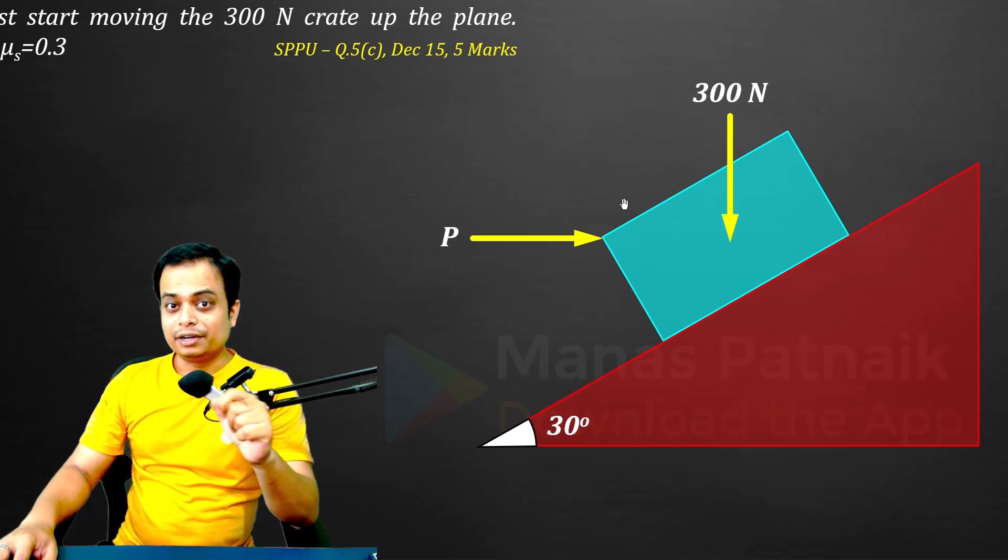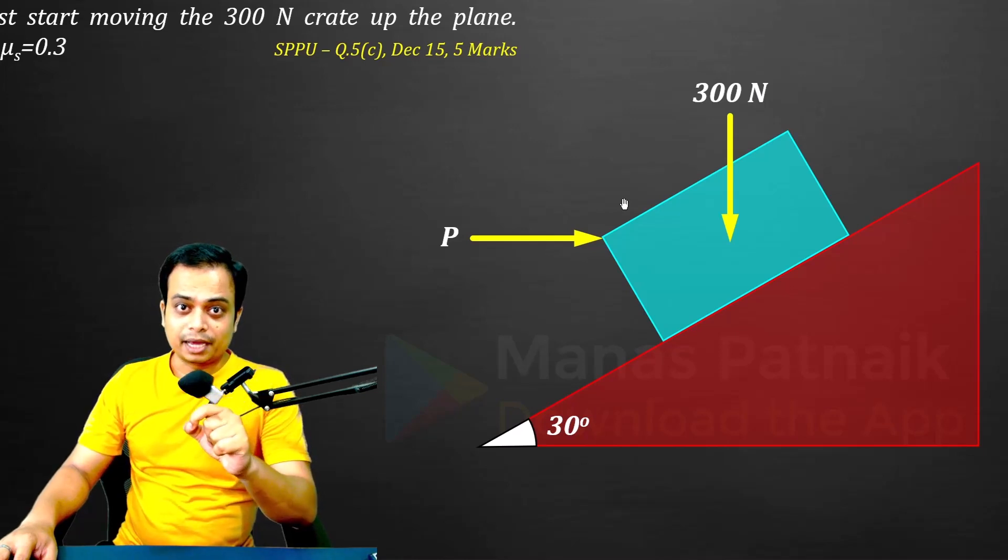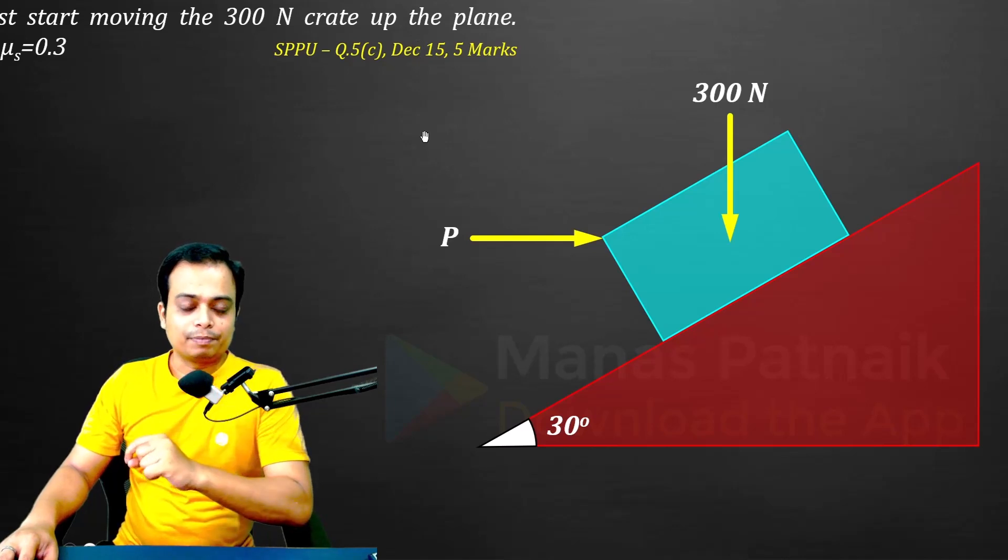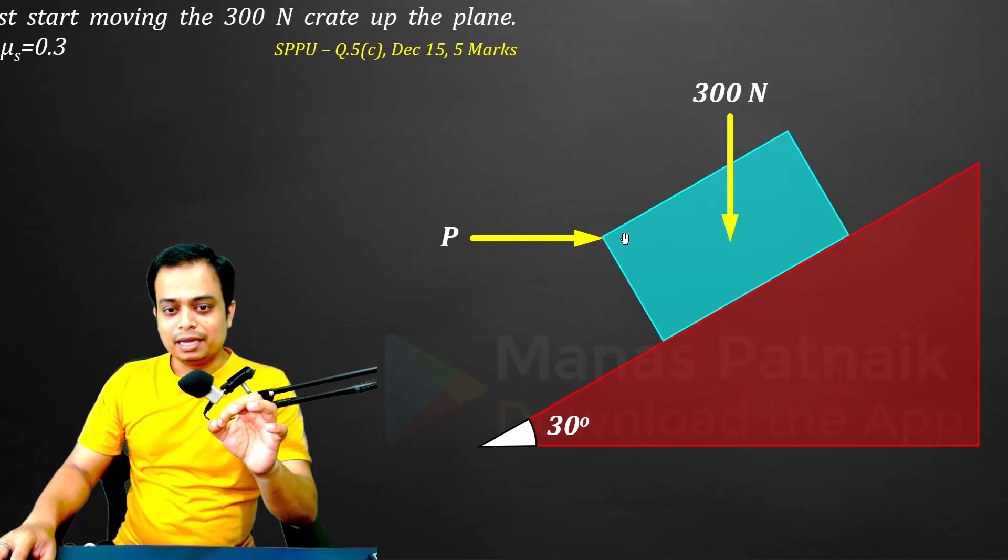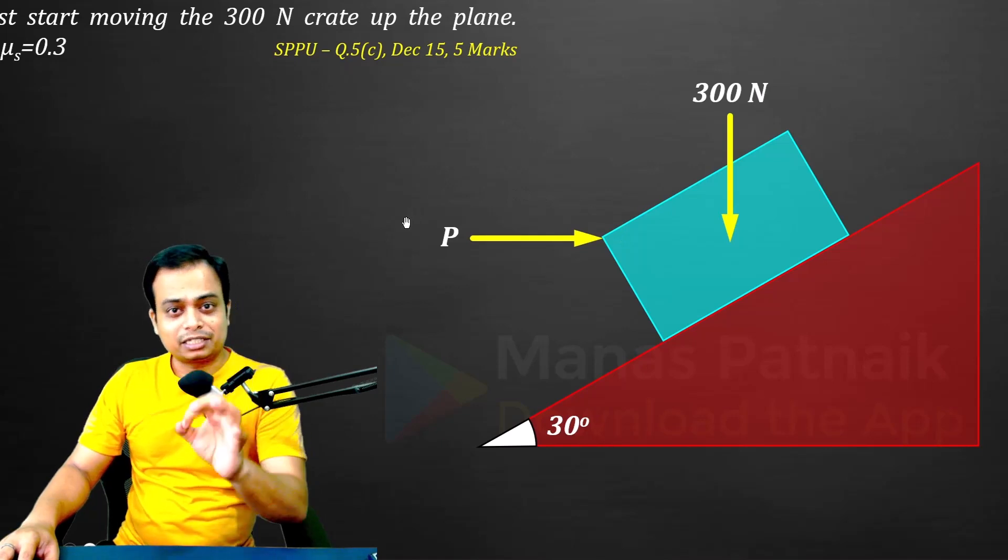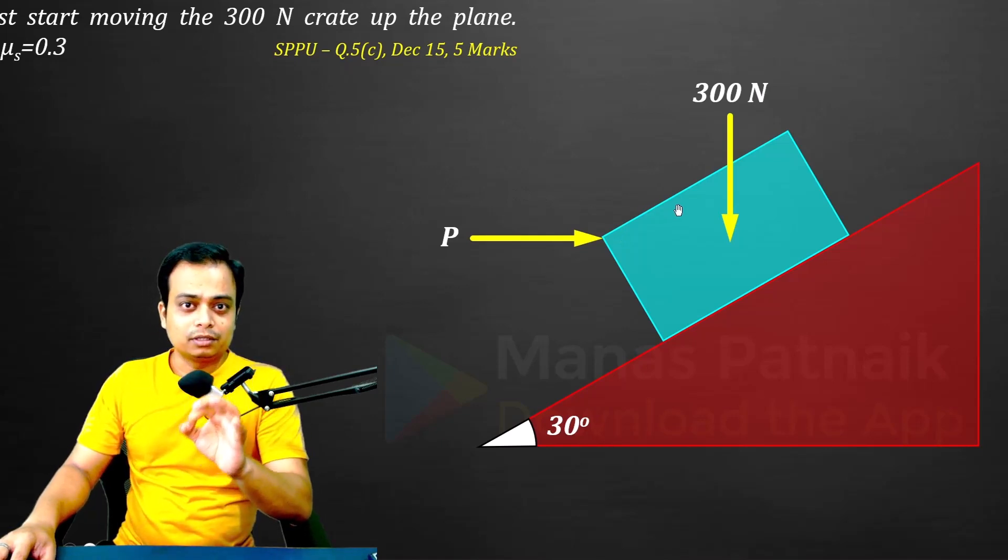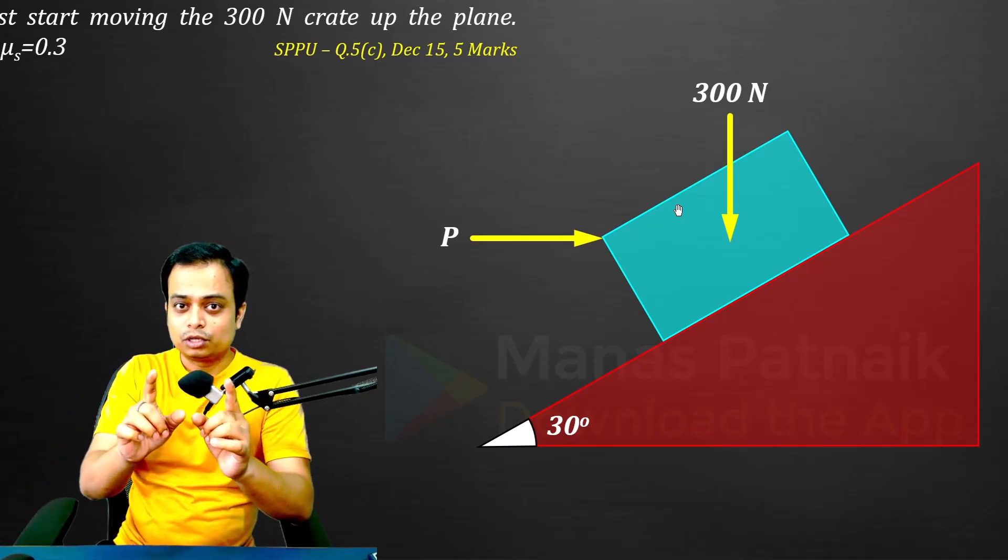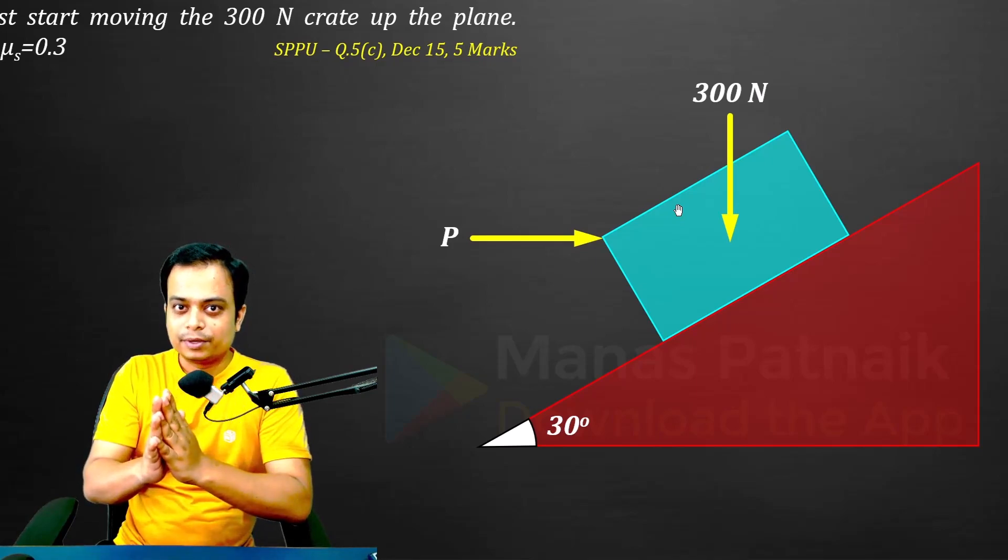This problem from friction can really boost your concepts in engineering mechanics and it was asked in the year 2015 in the University of Pune. Here this particular force P has to be calculated, which is just enough to move this 300 Newton weight block up the plane. It's a very interesting solution. I want all of you to watch this video right till the end, so here we go.